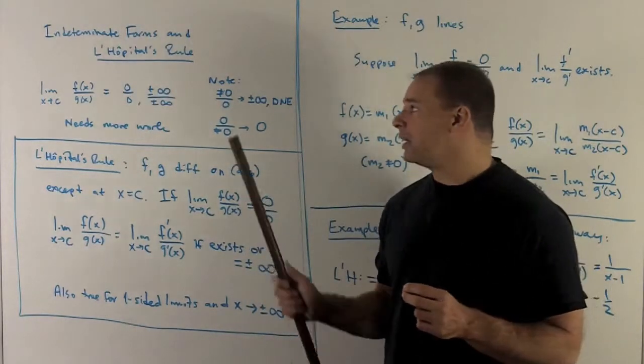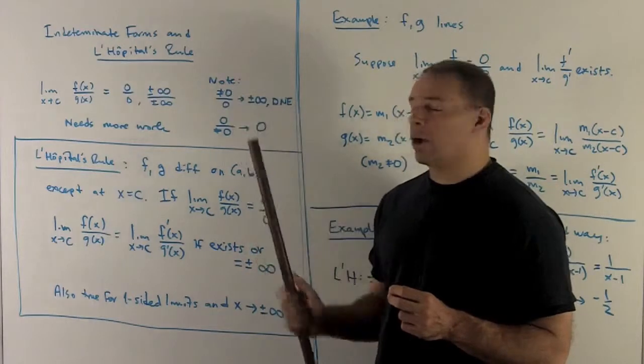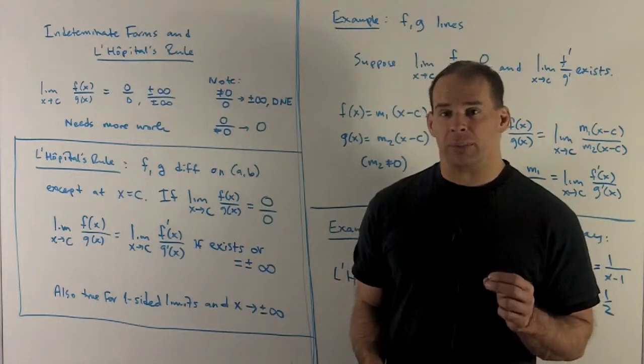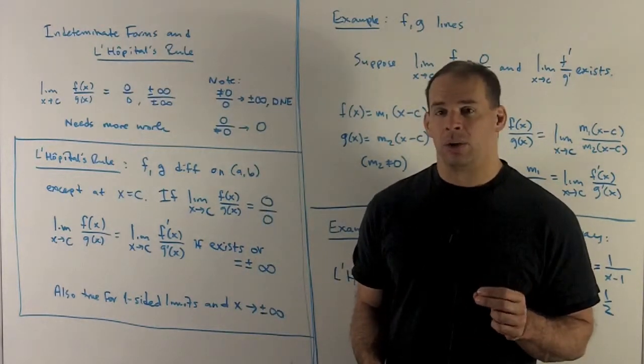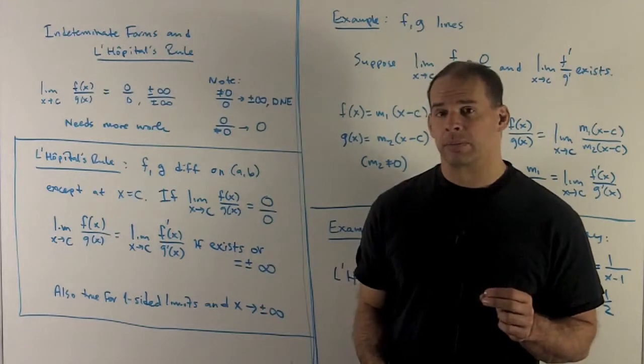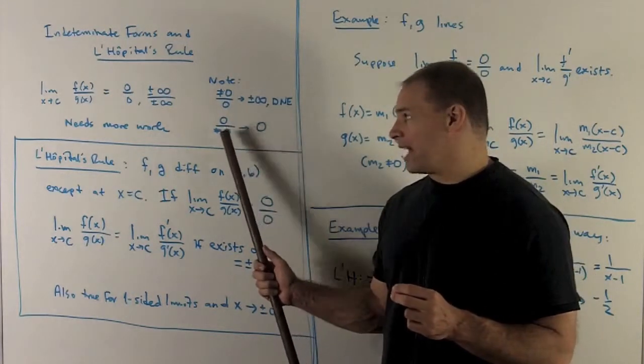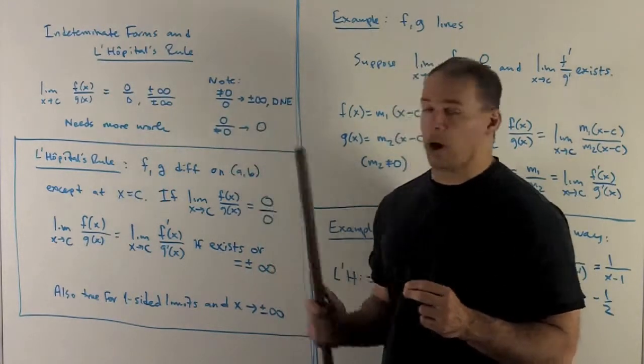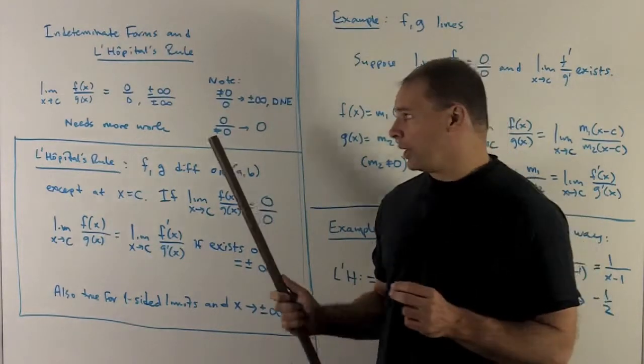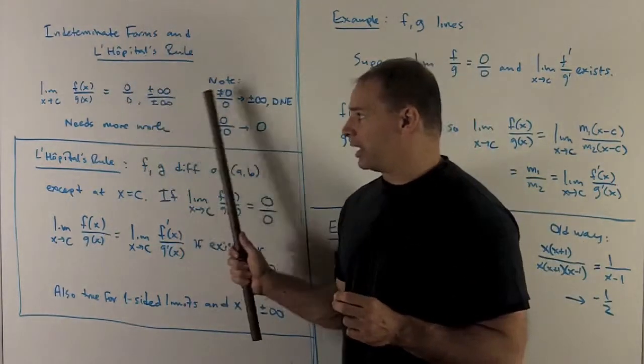We call these the indeterminate forms. We're not talking about a non-zero number over 0. There, our answer is going to be plus minus infinity, or the limit will not exist. If I have 0 over a non-zero, that's going to give us 0. So we're only talking about these cases right here.